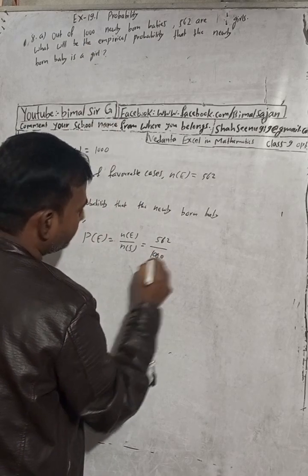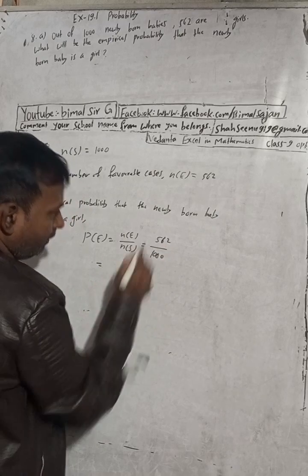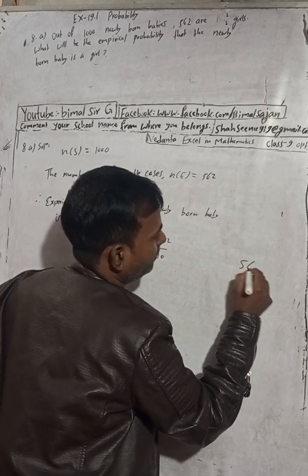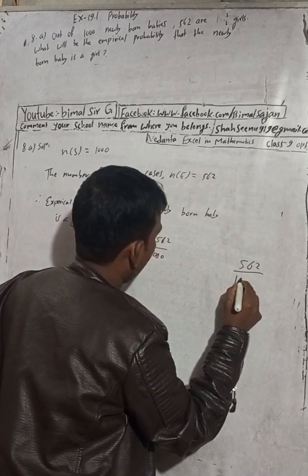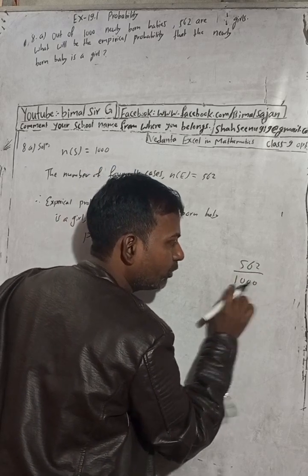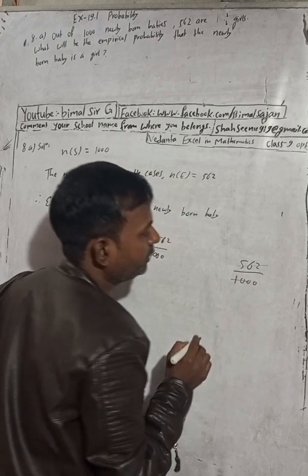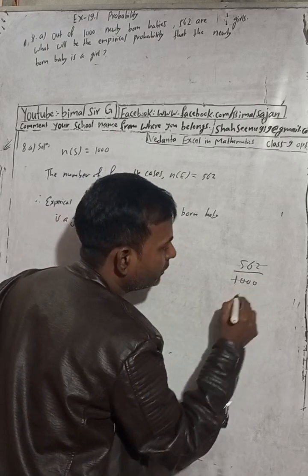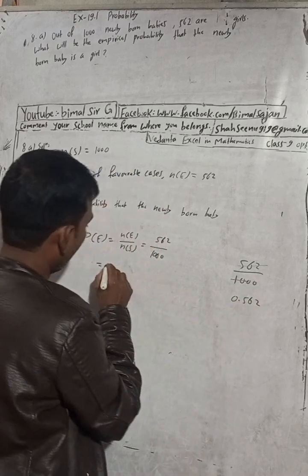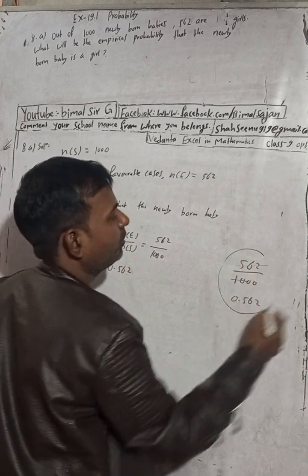When we divide this you will get... See the trick without calculator: 562 divided by 1000. There are three numbers here and four numbers there, meaning one extra zero, so our answer is 0.562. This is the trick.